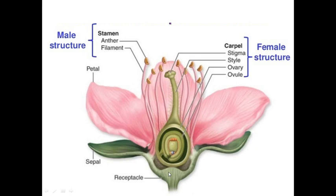A flower has a stalk which we call as pedicel, then a swollen structure which holds all the whorls of a flower called the receptacle, also known as thalamus or torus. The first whorl, generally green in color, is called sepals or calyx. The second whorl has colored leaf-like structures called petals or corolla. The third whorl is the male part called androecium, which has a knob-like structure called the anther and a thread-like structure called the filament; together they form the stamen.